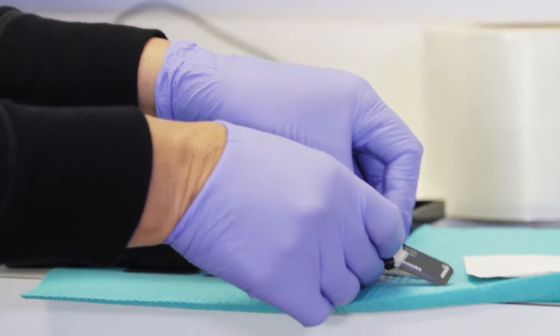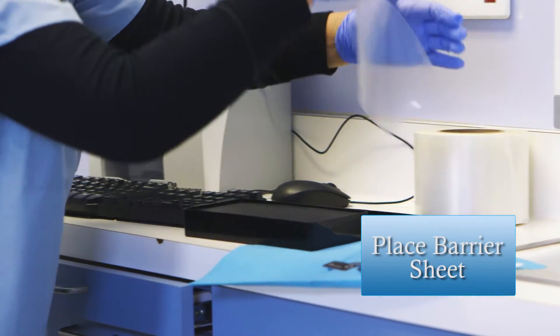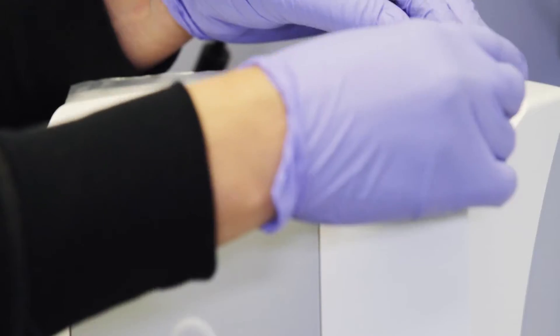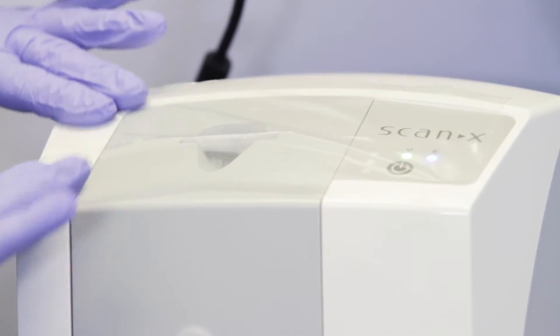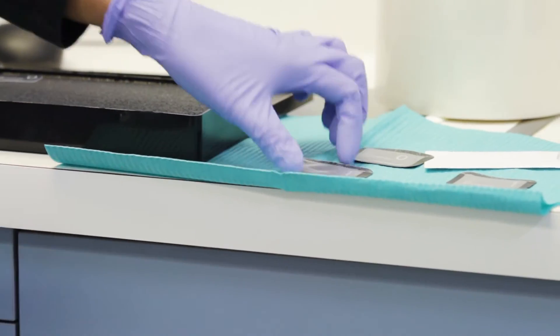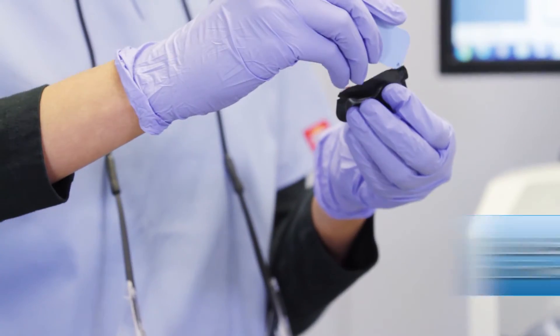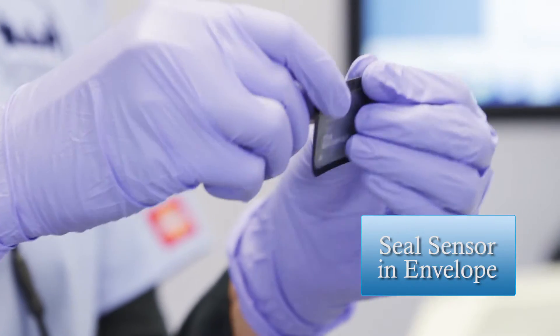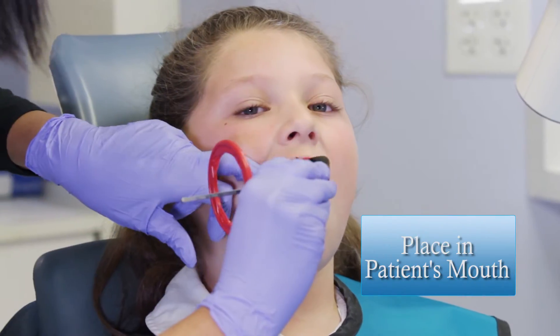After prepping your phosphor sensors, place the barrier sheet over the Scanex Swift insert. Sizes 0, 1, and 2 of the Scanex Phosphor sensor are interchangeable. Insert the relevant PSP flexible sensor into the barrier envelope, seal, and then place in the patient's mouth.